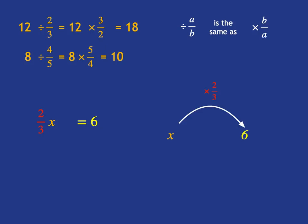Obviously, to undo the equation, I need to do the inverse of multiply, which is to divide by 2 over 3. But I want you to note what we've just discussed here. Dividing by 2 over 3 is just the same as multiplying by the flip of 2 over 3, so it's the same as multiplying by 3 over 2.